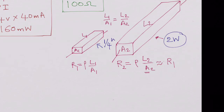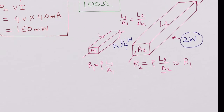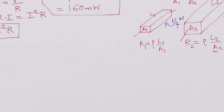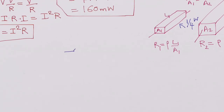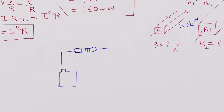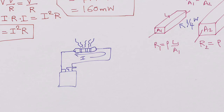What happens if you put excessive voltage or exceed the power rating? Say you have a resistor — the kind with color stripes — and you connect it to a 9-volt battery. If excessive current flows through the resistor, it catches fire and then most likely becomes an open circuit. The resistor is destroyed. So we must always choose the right wattage for the resistor.